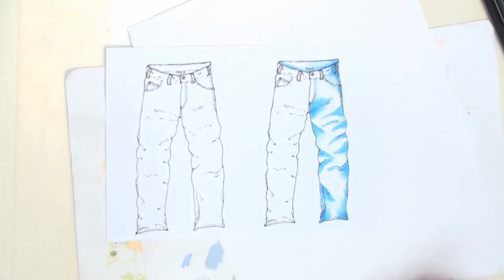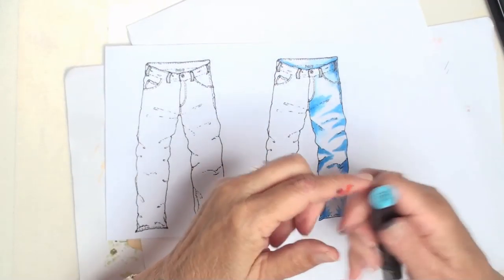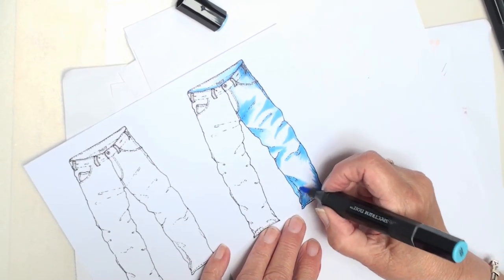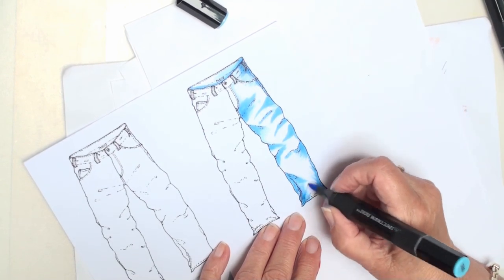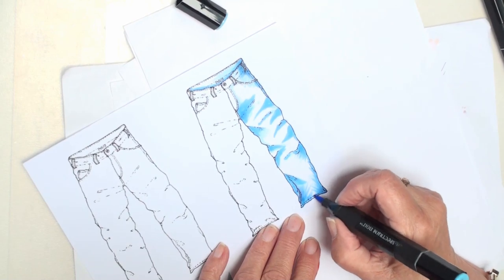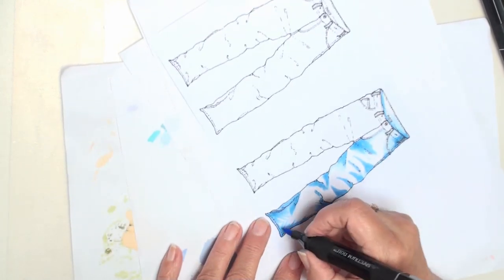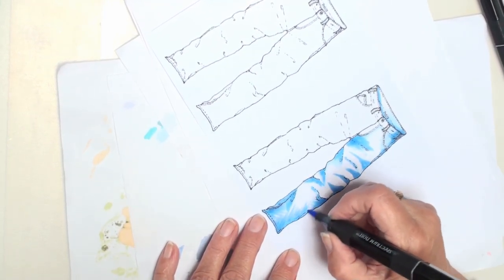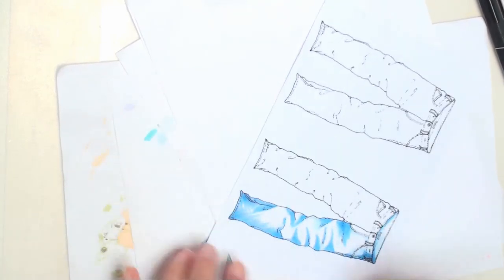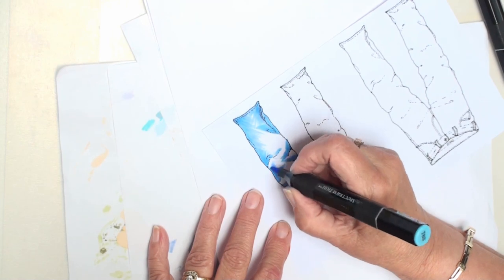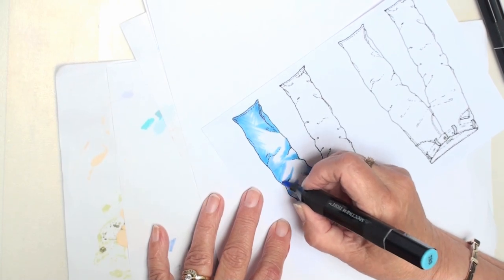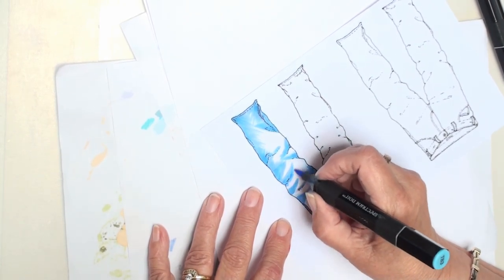Now once I've got that mapped out I can go to my middle color which is TB3. And again with the brush nib, I'm just going to extend those shadows further into the jean. So I'm not going over the darkest color that I've put down. I'm just working from it, from the edge of it. And I'm going to do this to all of the shadows. So that I'm working on both sides of what would be the fold in the material.